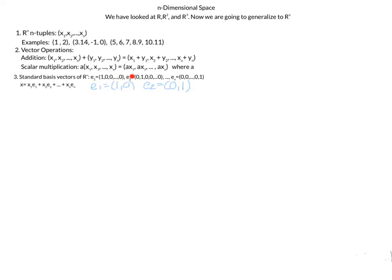Each E sub i has a 1 in the i-th position — so E2 has a 1 in the second position and 0 everywhere else. This allows us to decompose our vector x into the standard basis: x1 times E1, plus x2 times E2, up to xn times En.